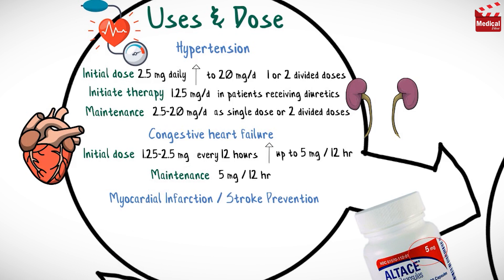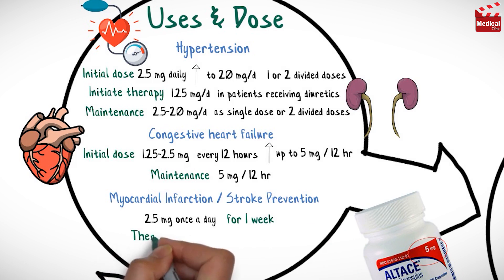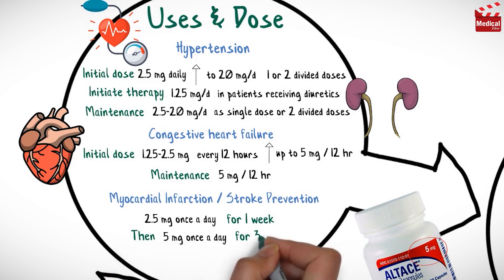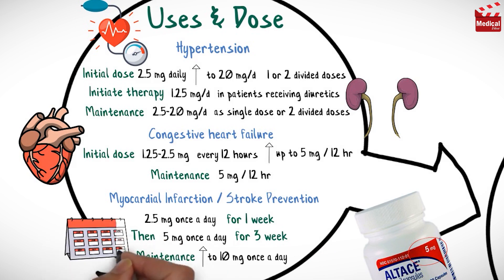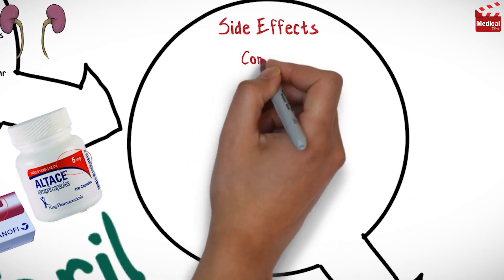For myocardial infarction and stroke prevention, the usual initial dose is 2.5 milligrams once a day for one week, then 5 milligrams once a day for three weeks, then increased as tolerated to 10 milligrams once a day.